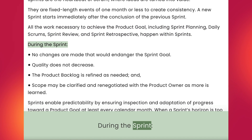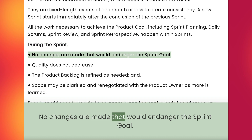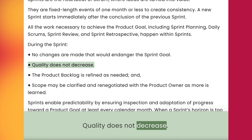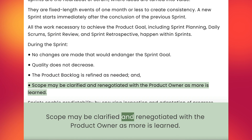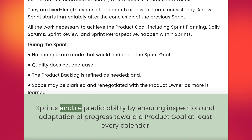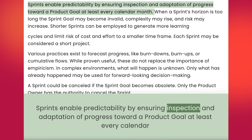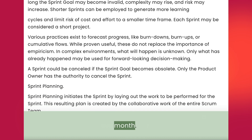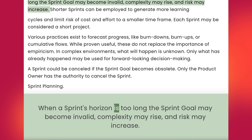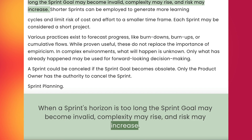During the sprint: no changes are made that would endanger the sprint goal; quality does not decrease; the product backlog is refined as needed; and scope may be clarified and renegotiated with the product owner as more is learned. Sprints enable predictability by ensuring inspection and adaptation of progress toward a product goal at least every calendar month. When a sprint's horizon is too long, the sprint goal may become invalid, complexity may rise, and risk may increase.